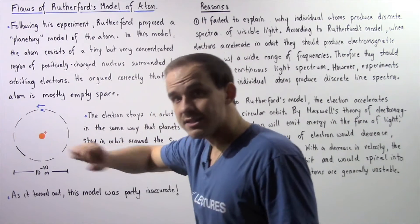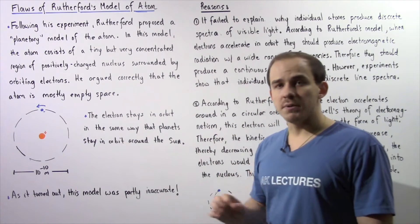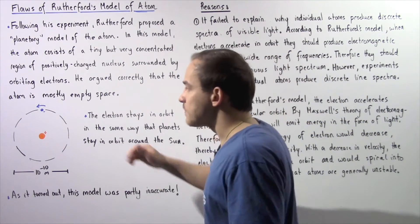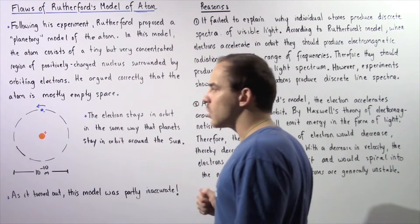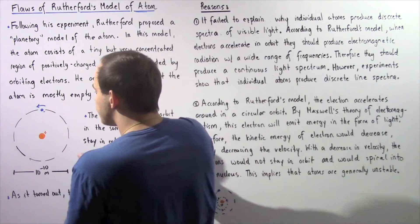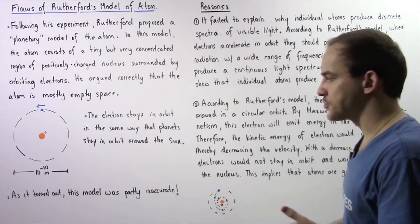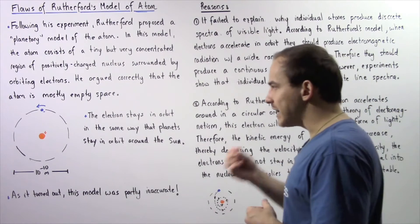Now he said that the electron actually stays in orbit around the nucleus in the same exact way that our planets stay in orbit around the sun. That is, the velocity of the electron is always perpendicular to the attractive electro-force between these two regions.